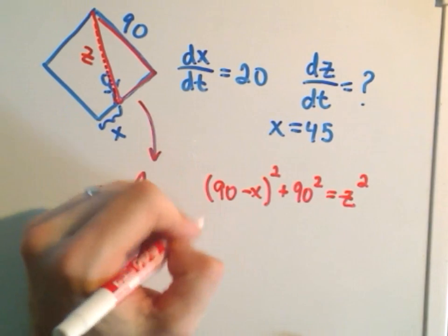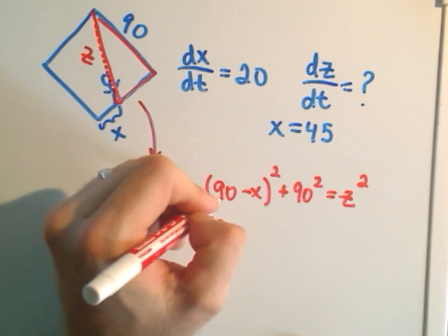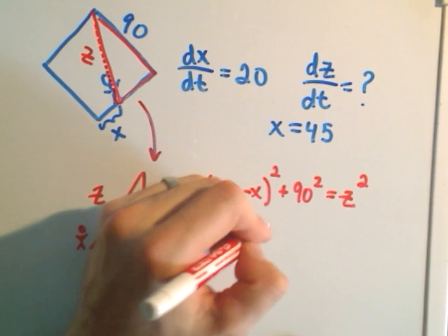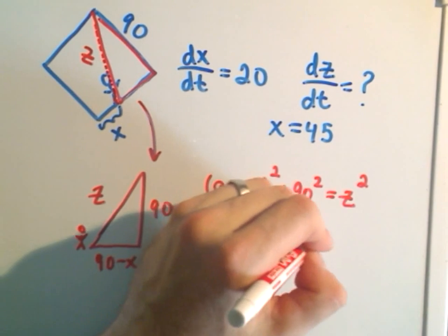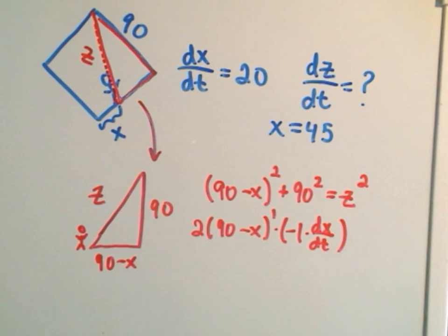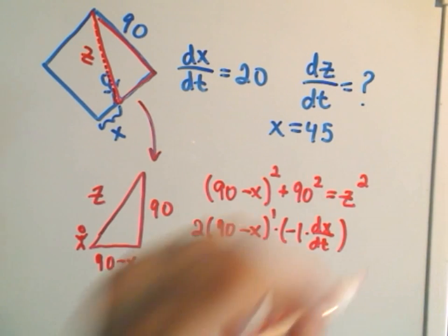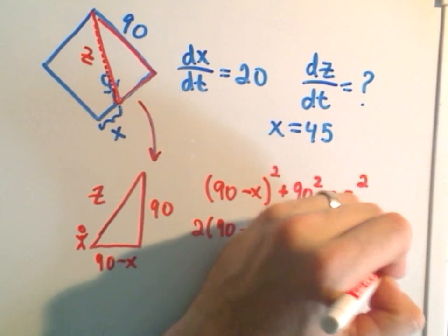Well, if you multiply that, we'll take the derivative with respect to time. We'll get 2 out front using the chain rule, 90 minus X to the first power. The derivative of the inside will be negative 1 dx dt. And then on the right side, the derivative of Z squared will be 2Z dz dt.